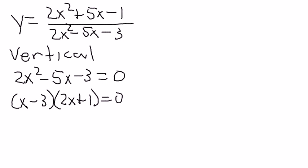Honestly, the factoring is probably the hardest part of these questions. Sometimes it's easy, sometimes not. So x equals 3 or x equals negative one-half, which means I have vertical asymptotes at both of those values.